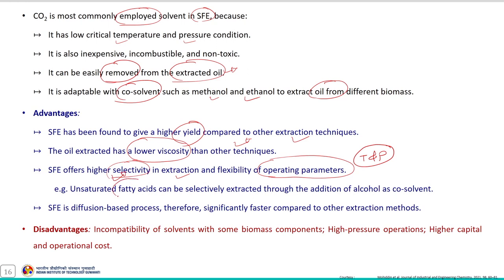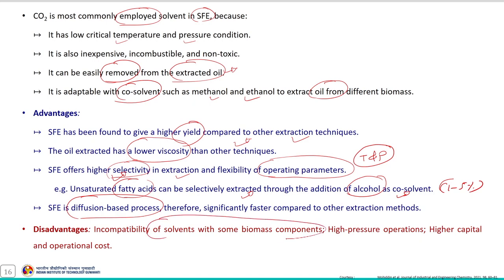For example, unsaturated fatty acids can be selectively extracted through the addition of alcohol as a co-solvent in the range of 1 to 5 percent. As this is a diffusion-based process, it is significantly faster compared to other extraction methods. However, limitations include incompatibility of solvent with some biomass components, high pressure operations and higher capital and operational cost.